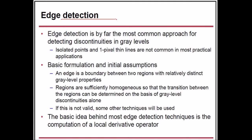Edge detection is by far the most common approach for detecting discontinuities in gray levels, since isolated points and one-pixel-thin lines are not common in most practical applications. An edge is a boundary between two regions with relatively distinct gray level properties. These regions are sufficiently homogeneous so that the transition between them can be determined on the basis of gray level discontinuities. If this assumption is not valid, other techniques are used.